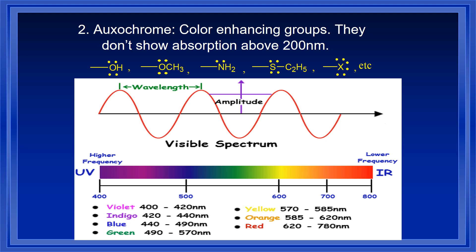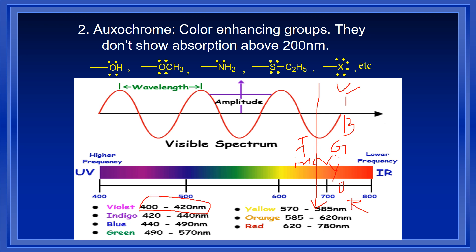You should know the VIBGYOR spectrum. This is the spectrum — V, I, B, G, Y, O, R — and if you go down, wavelength increases; lambda increases as you go from V to R, that means violet to red. Lambda max increases. Violet color gives absorption at 400 to 420 nm, and wavelength is highest for red. VIBGYOR is particularly important — this is the general idea of the spectrum.